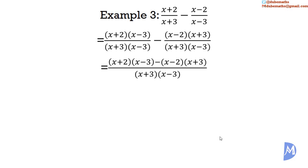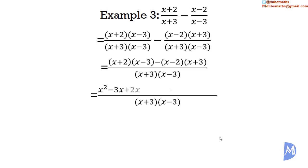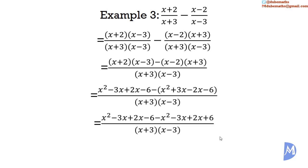We expand the brackets. For the first numerator: x times x equals x², x times negative 3 is negative 3x, positive 2 times x is positive 2x, and positive 2 times negative 3 is negative 6. We then subtract the second expanded bracket: x times x equals x², x times positive 3 equals positive 3x, negative 2 times x equals negative 2x, and negative 2 times positive 3 equals negative 6. Distributing the negative sign gives negative x², negative 3x, positive 2x, and positive 6.